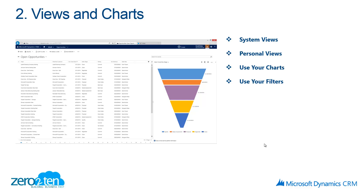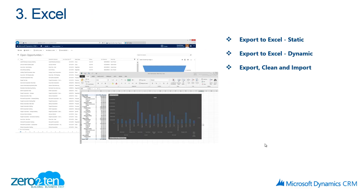Next we're going to look at views and charts. We'll see both system views that our administrator created for us, create our own views, leverage charts to understand the data on each view, and use filters similar to what we might do inside of Excel. Next we'll look at Excel itself — how Excel works with CRM. There are different options: pushing data out to Excel as a static worksheet, making data available for re-importing, and having a dynamic connection between Excel and CRM so we can change information and bring it back.